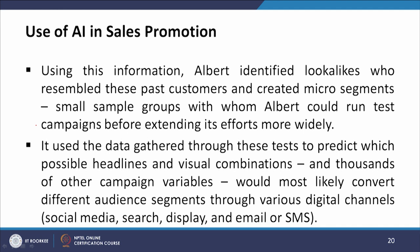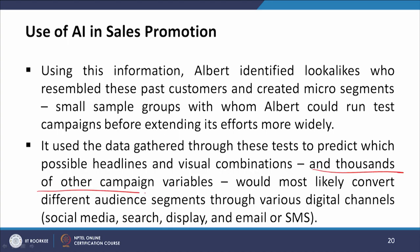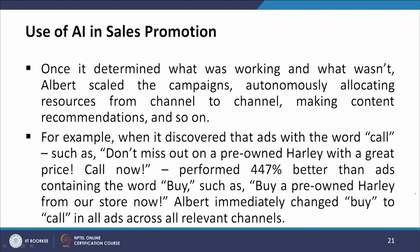Using this information, Albert identified lookalikes who resembled past customers and created micro-segments — small sample groups with whom Albert could run test campaigns before extending its efforts more widely. It used data gathered through these tests to predict which headline and visual combinations, and thousands of other campaign variables, would most likely convert different audience segments through various digital channels: social media, search, display, and email or SMS. Once it determined what was working and what was not, Albert scaled the campaigns, autonomously allocating resources from channel to channel and making content recommendations.